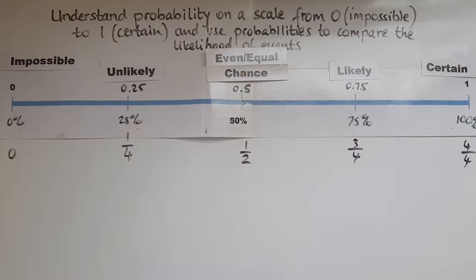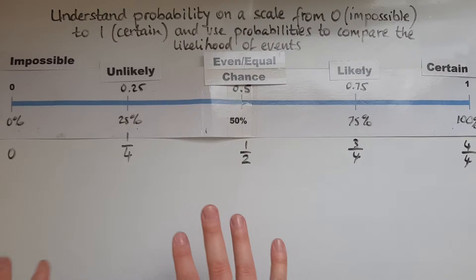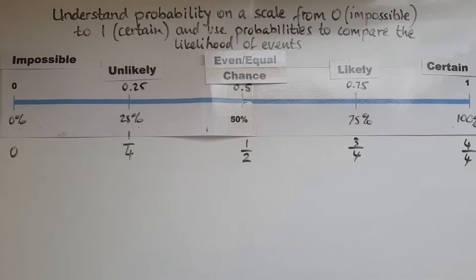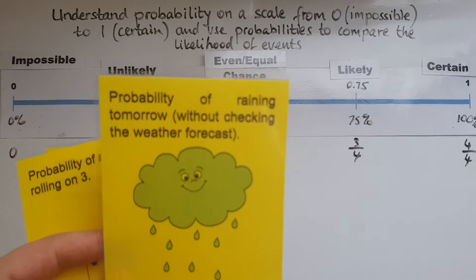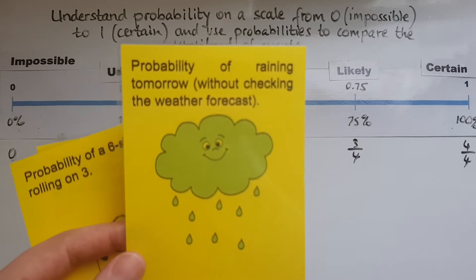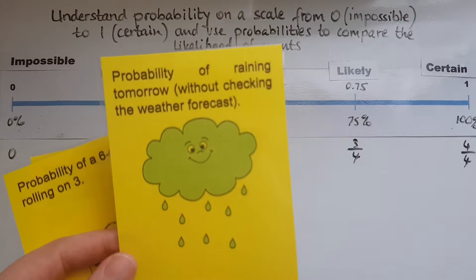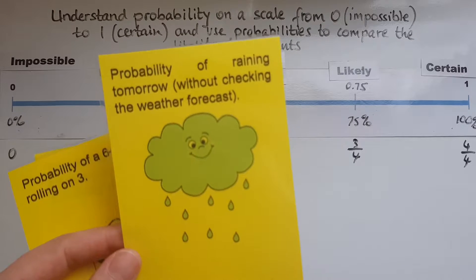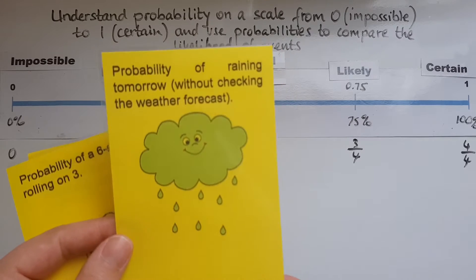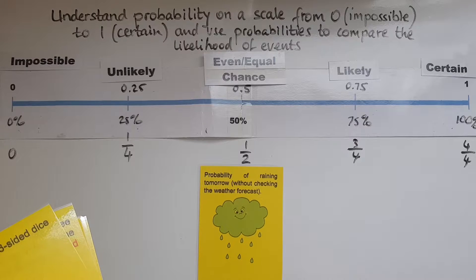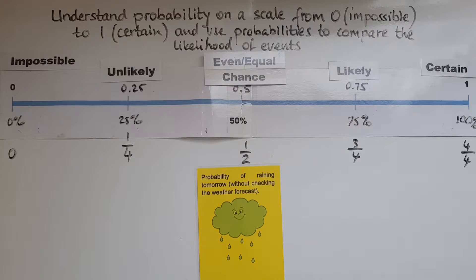Now let's look at some events and place them on the scale based on their probability. Here is an event: the probability of raining tomorrow without checking the weather forecast. You haven't checked it, so you don't know. It could rain, but it probably won't — it's 50-50. So without checking the weather forecast, I'd place it at 50 percent, or 0.5.